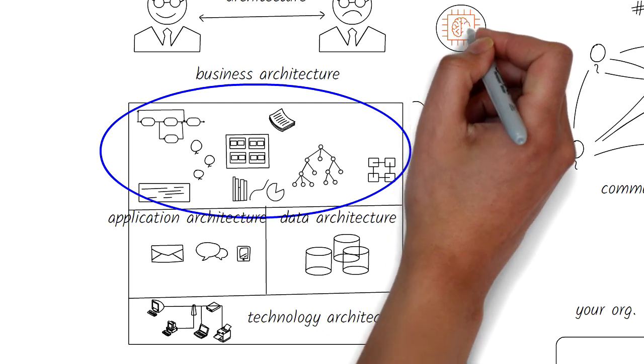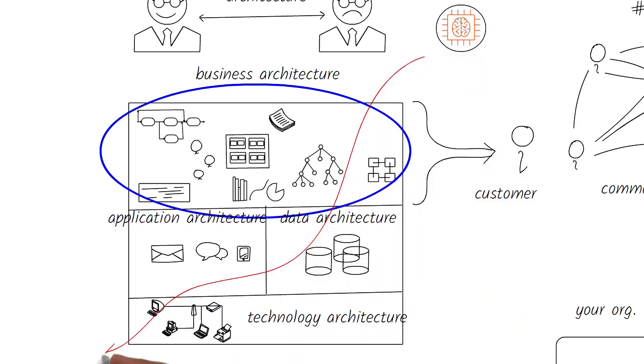Business architecture can help to frame the business side of the challenge. Follow this up with application, data, and infrastructure architectures to get a better idea of how to leverage AI in your company.